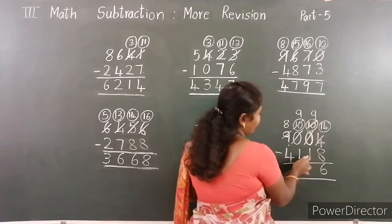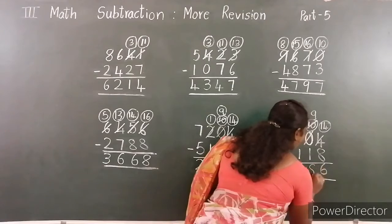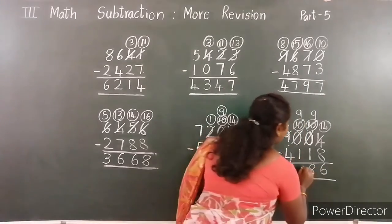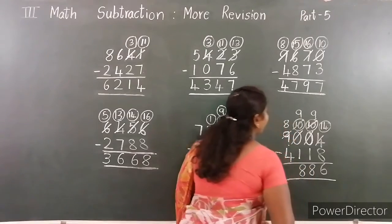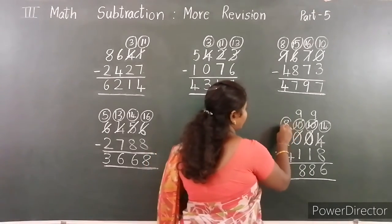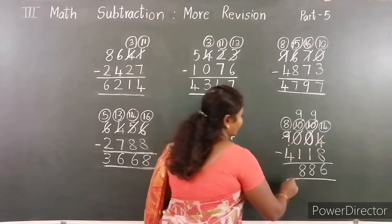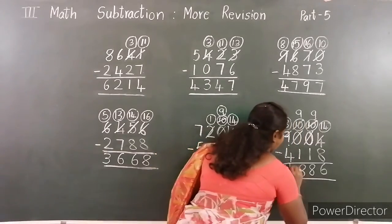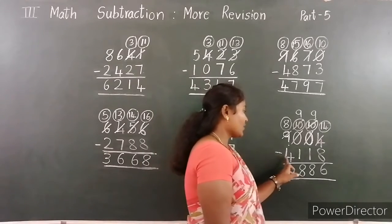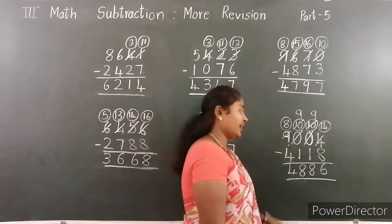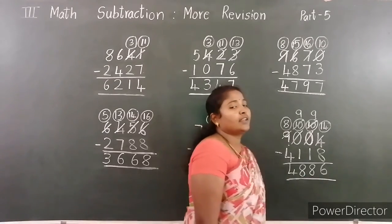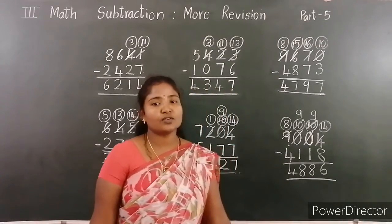Hundreds place: 9 minus 1 is 8. Thousands place: 8 minus 4 is 4. 9,004 minus 4,118 — the difference is 4,886. Thank you, children.